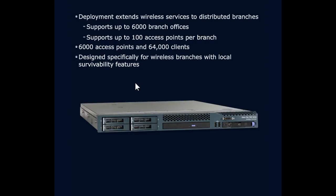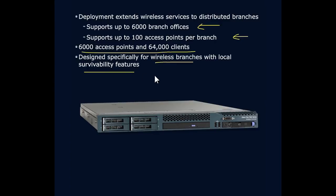For the branch office, we have specifically the Flex 7500 series, which supports up to 6,000 branch offices with 100 access points per branch — really designed for aggregation. There's an expectation of latency and delay, but it has enough memory and processor power to handle all those various connections: 6,000 access points and 64,000 clients. It's for wireless branches with survivability features, so if there's a loss of connection, it can recover when it comes back online.